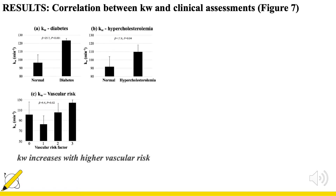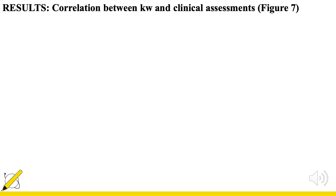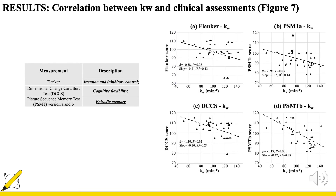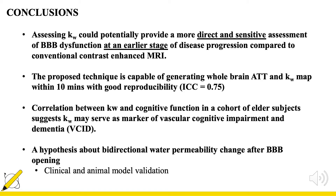Finally, we compared Kw and clinical assessments from those 19 subjects. We found a significant increase of Kw in subjects with higher vascular risk and higher CDR score, which indicates more severe dementia. We also found correlations between Kw and NIH Toolbox measurements such as attention and short-term memory. Overall, Kw increased with worse cognitive function. Thank you for your attention.